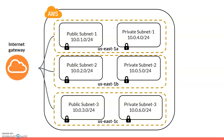We have created all the required resources: subnets, internet gateway, public and private subnets, routing tables and their associations, Elastic IP, NAT gateway, and the private routing table. We'll see how to deploy an EC2 instance in a specific VPC in the next session.